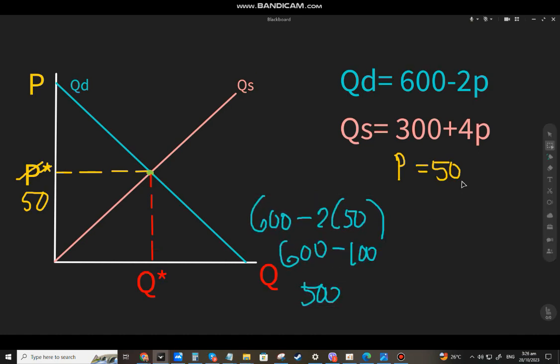Now if we substitute 50 into the Qs equation: 300 plus 4 times 50 equals 300 plus 200, which is 500. Same result! So our Q star is 500.